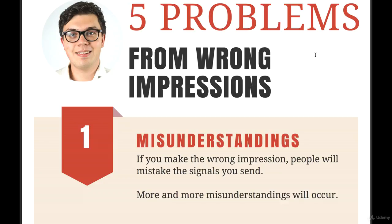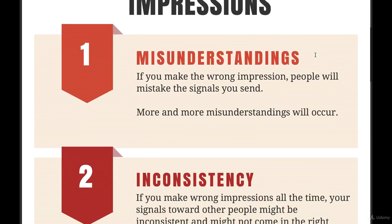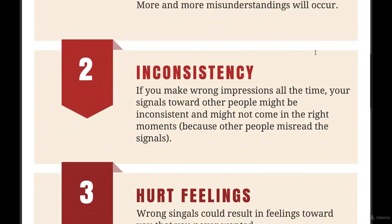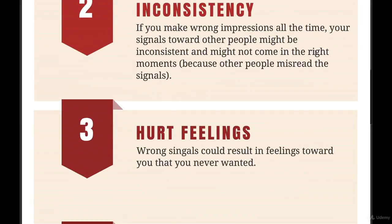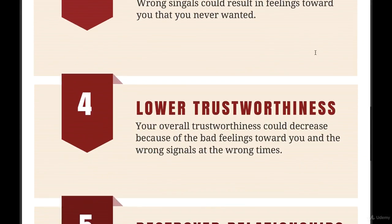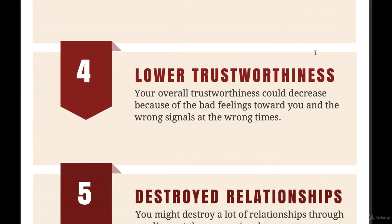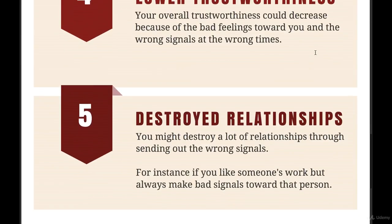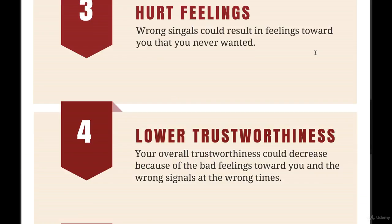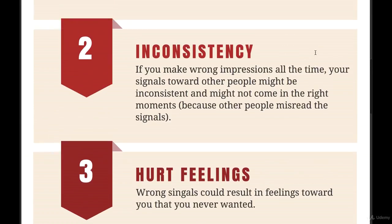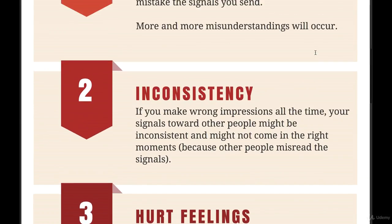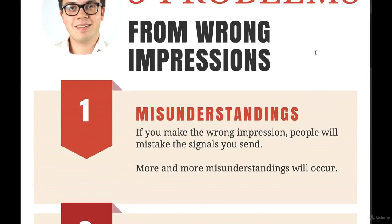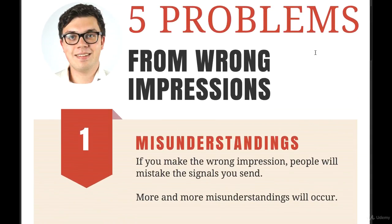The first one is misunderstandings, the second one is inconsistency, the third one is hurt feelings, the fourth one is lower trustworthiness, and the fifth one is destroyed relationships. If you want to download this infographic, just go to the left top corner and click on download.